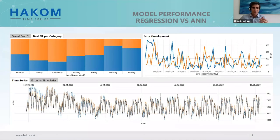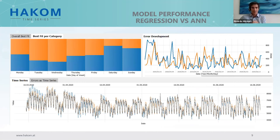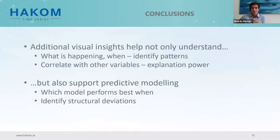Another use case: if we build two models on the same data but using different methodologies. Here we compare two models, one using multivariate regression in blue and one using a neural network in orange. These two models have very similar overall performance, but the neural network performs better during weekdays while the regression is more often accurate on weekends — as seen in the distribution from Monday to Sunday on the top left. This could provide important information to assist in selecting which model to employ and when. The visual component helps us not only understand what is going on, but also provides a lot of input on how we can improve things going forward from a forecasting perspective.